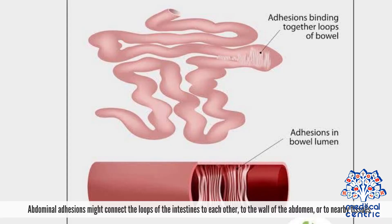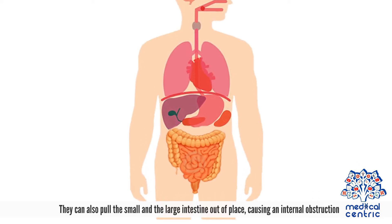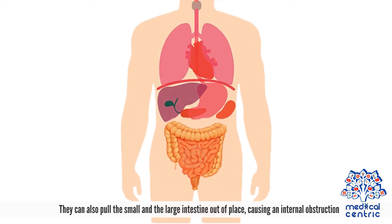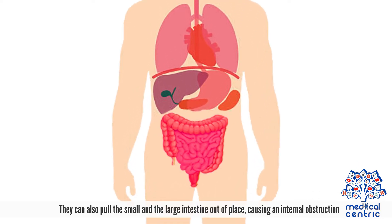Abdominal adhesions might connect the loops of the intestines to each other, to the wall of the abdomen, or to nearby tissues. They can also pull the small and the large intestine out of place, causing an internal obstruction.